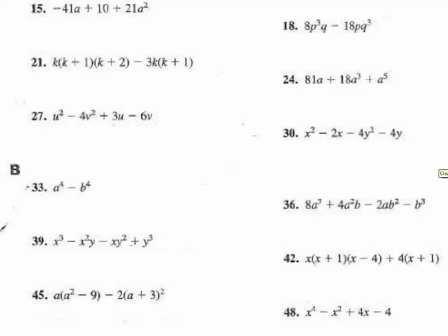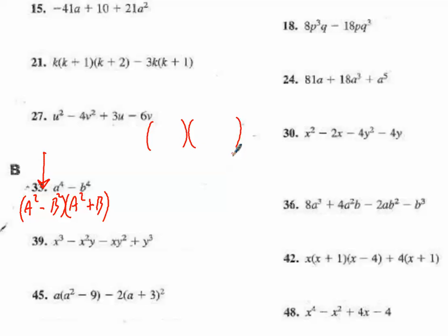Number 33 starts off pretty simple — that is obviously a difference of squares. We have a squared minus b squared. Now the trick here is this is a double difference of squares, because this right here is also a difference of squares: they're square terms and we're subtracting. So I'm going to have two pairs of parentheses. I have a squared plus b squared — that is not a difference of squares, I can't do anything with that. And then a plus b and a minus b. Some of these can be done in mere seconds.